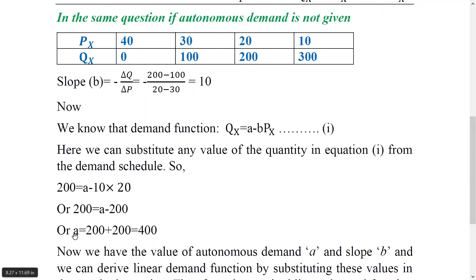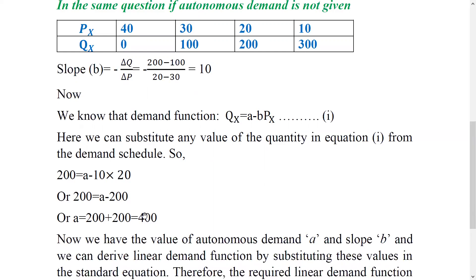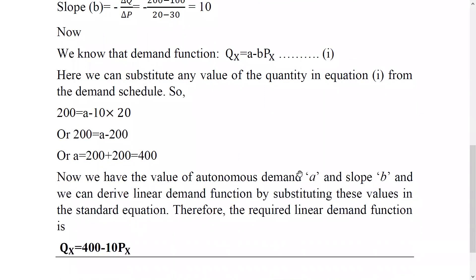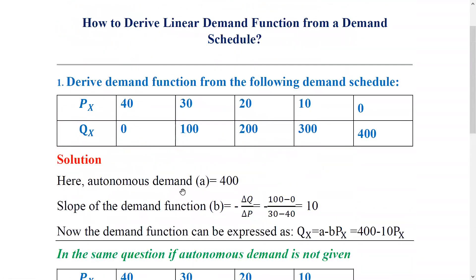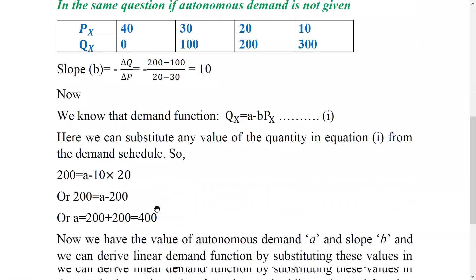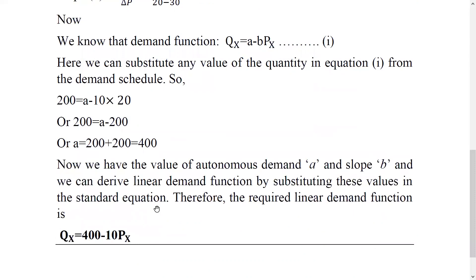So 300 equals A minus 10 times 30, which gives A equals 400. Therefore QX equals 400 minus 10PX. This is how we derive the linear demand function by measuring the autonomous demand value and the slope from the demand schedule.